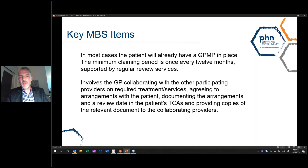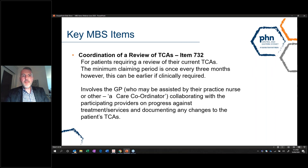That's very important — we often don't see copies being sent to allied health professionals in general practice. The next item number is the coordination of a review of a TCA. The minimum claim period is once every three months and can occur earlier if clinically warranted. This involves GPs — assisted by their practice nurse or care coordinator — collaborating with participating providers on progress against treatment and services, and documenting changes to the patient's original TCA.